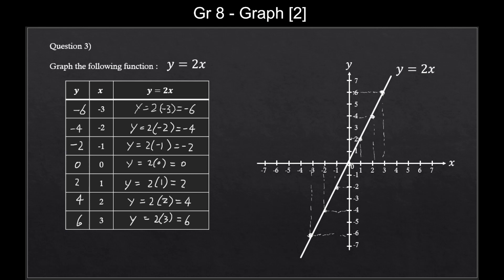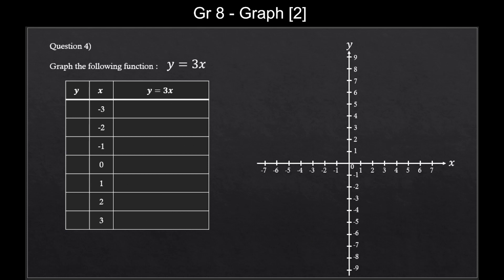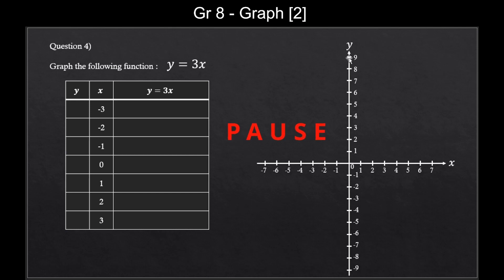Let's move on to our last question. Graph y equals 3x. Now it's 3x — can you guess what will happen? Let's first create this chart and the graph again. But this time for our graph, you see how my y axis is longer than before? You'll understand why when you start graphing this function. So for now, just make sure you have tick marks for the numbers from minus 9 to 9. Now, are you ready to calculate? Let's do this.